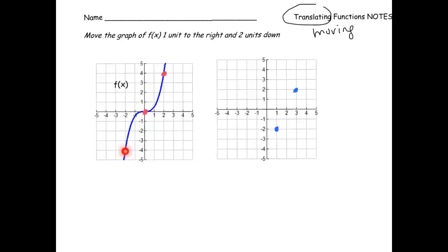And our last point. If we move that one to the right and two units down, I go off my graph — but it's okay, we're only going one off. So I'm just going to extend my axis here, and here's our new point. Now let's connect them in the same shape as the original — it curves that way, and this one starts to curve up, just like that.